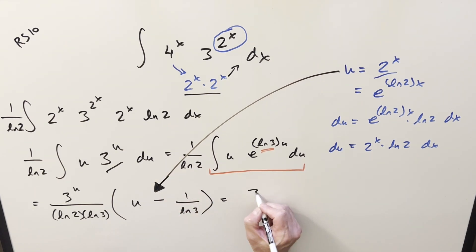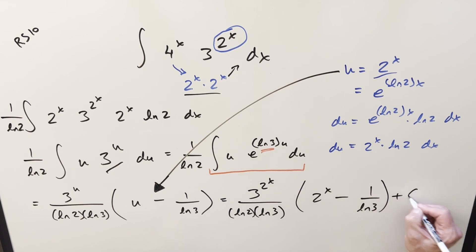So for my final solution to this, we're just going to have 3 to the 2x over ln 2 times ln 3 times 2 to the x minus 1 over ln 3, add a plus c, and that's it.